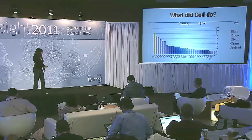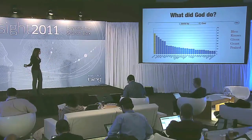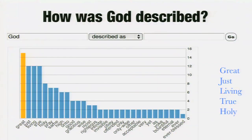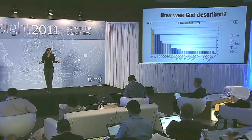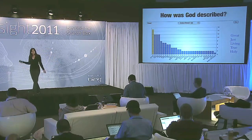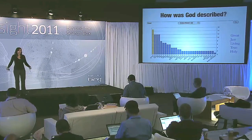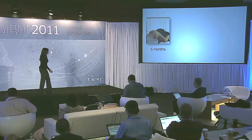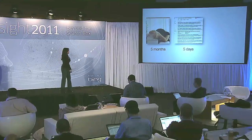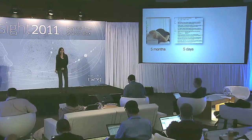Let's zoom in. What did God do? He blessed, he knew, he gave, he granted, he praised. How is God described? He's great, just, living, true, holy. So while you might think that slaves in their misery would blame God, they in fact seem to have a rather good relationship with him. The great power of this technology is that we've taken what would have taken an unassisted graduate student five months, then five days with search, and reduced it to a process that takes just five minutes.